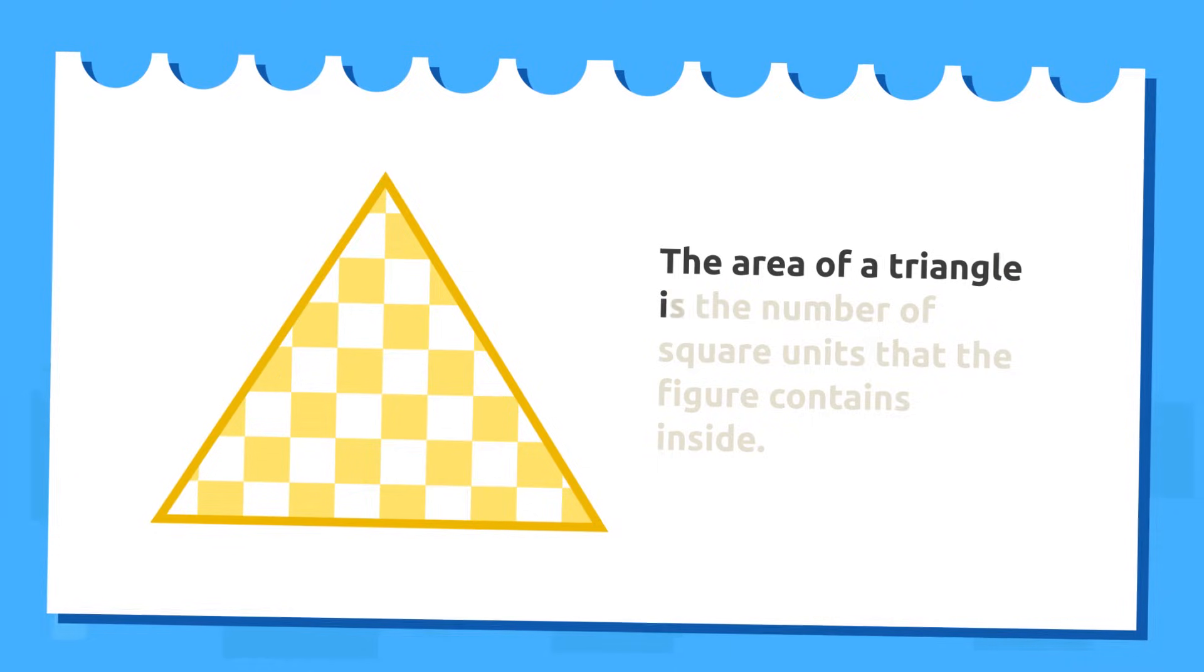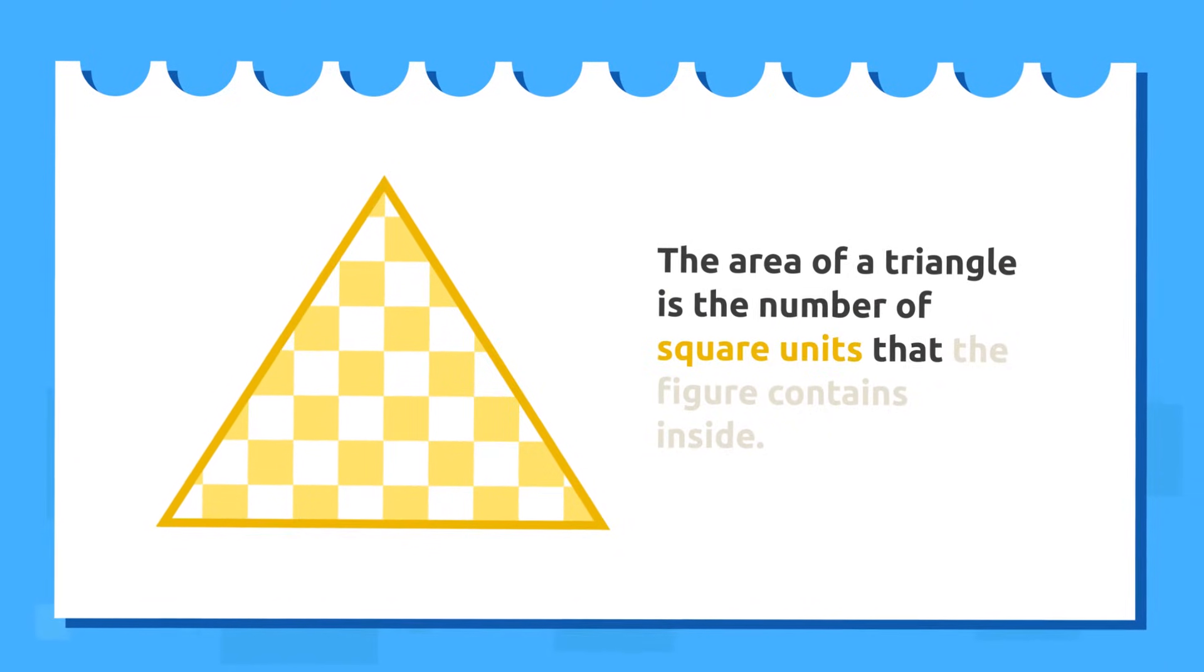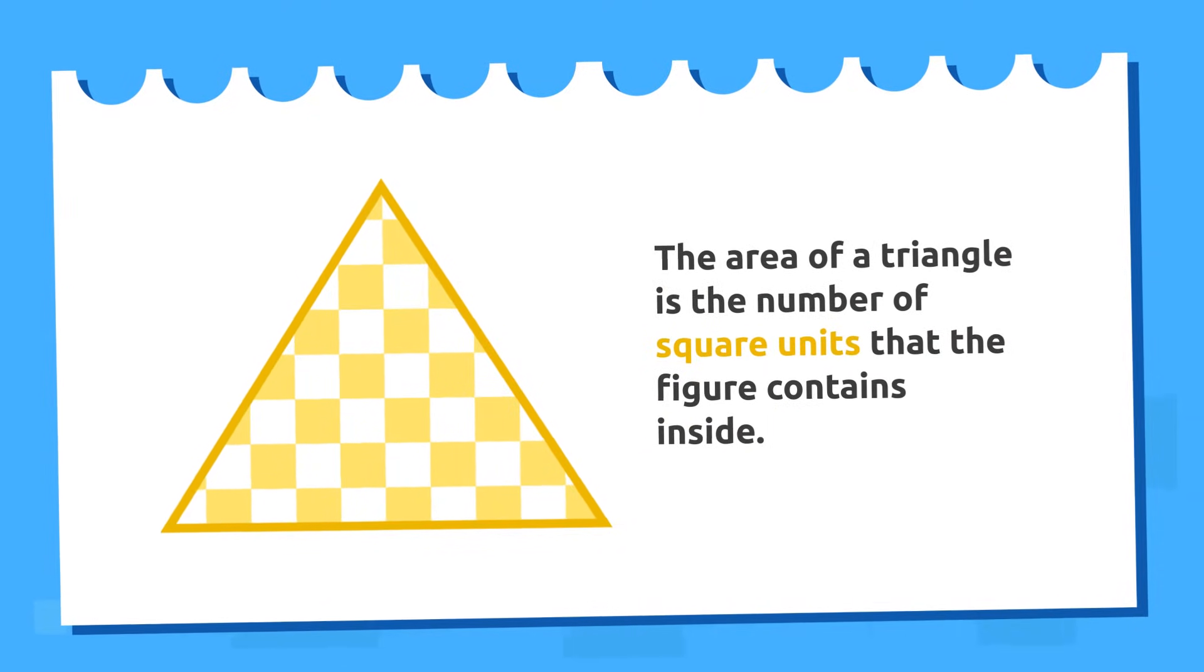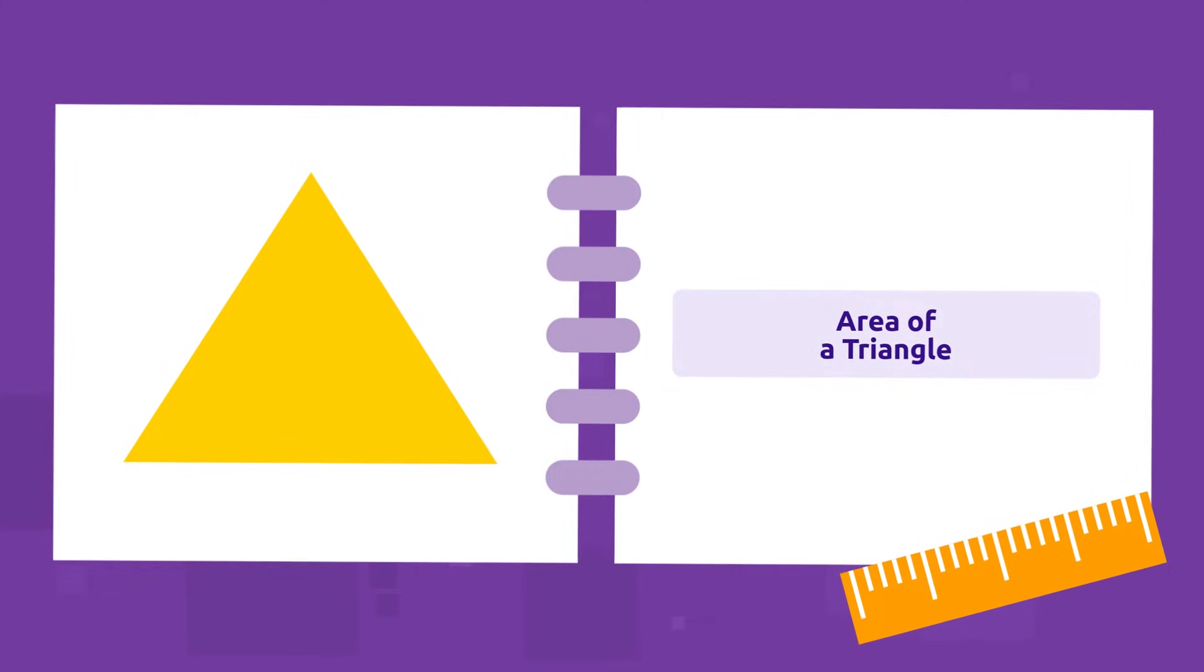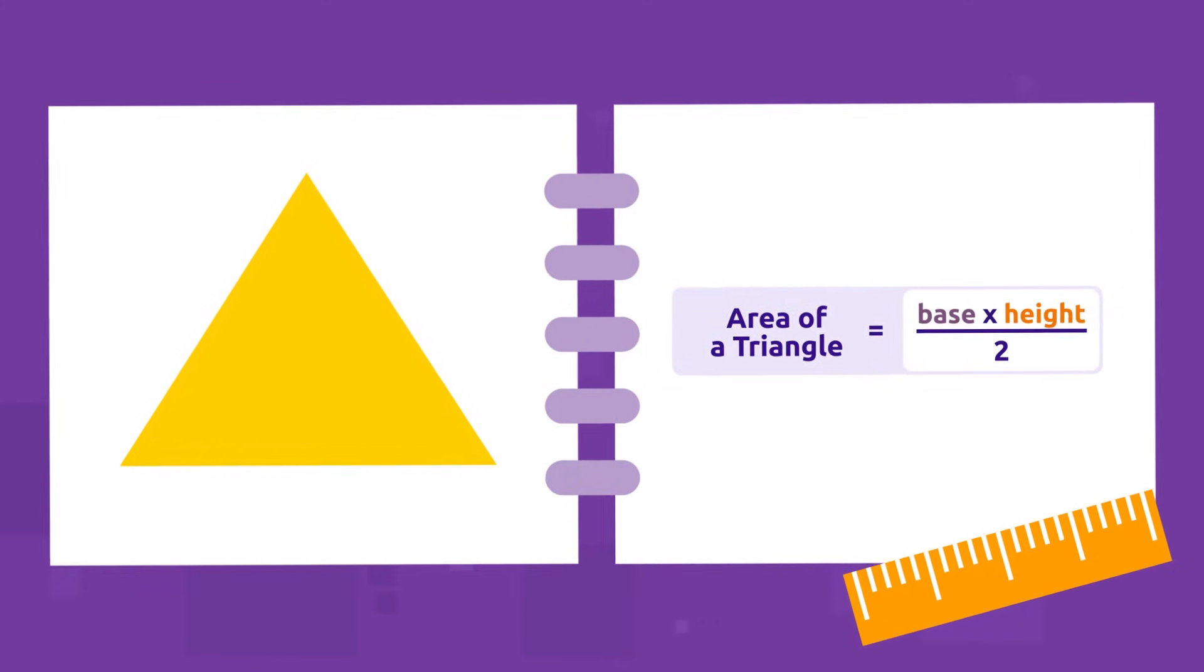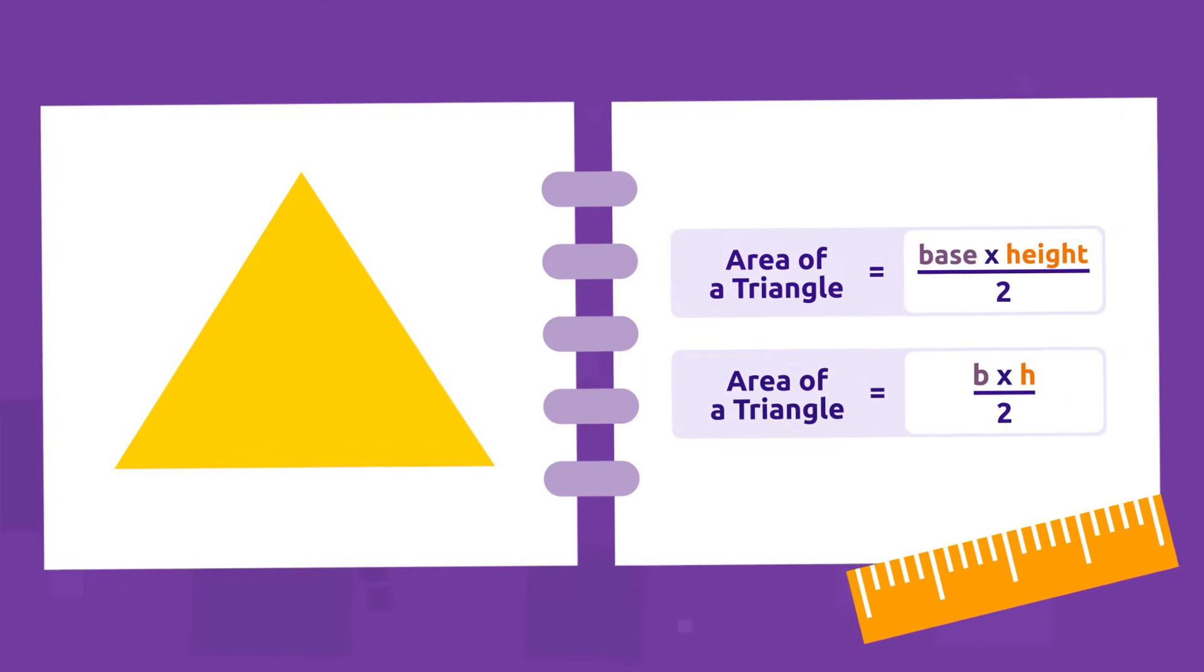As you can see in this image, the area of a triangle is the number of square units that the figure contains inside. To calculate the area of a triangle, we must use the following formula: the area of a triangle is equal to the base times the height divided by two.